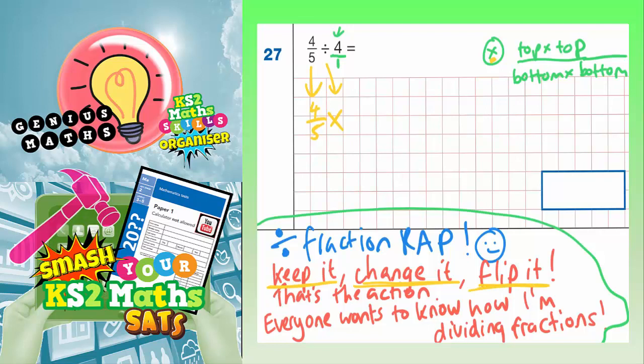The third bit is flip it. So the second fraction, which is 4 over 1, when we flip it becomes 1 over 4, to be a quarter. And that's basically almost it.